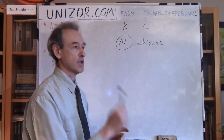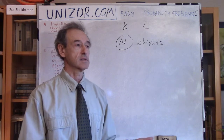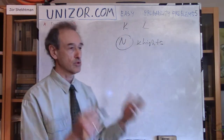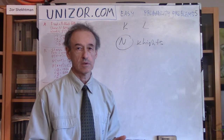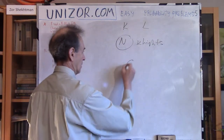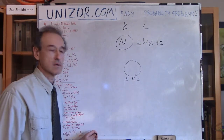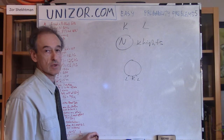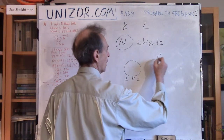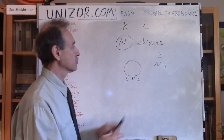I suggest two different solutions. Solution number one: let one of them take any place — it doesn't really matter which one. Then consider how many choices exist for the second person. If King Arthur took one place, there are N-1 other choices for Sir Lancelot. But only two of these N-1 choices are adjacent to King Arthur — one on each side. So we have 2 out of N-1 good choices, giving a probability of 2 over N-1.